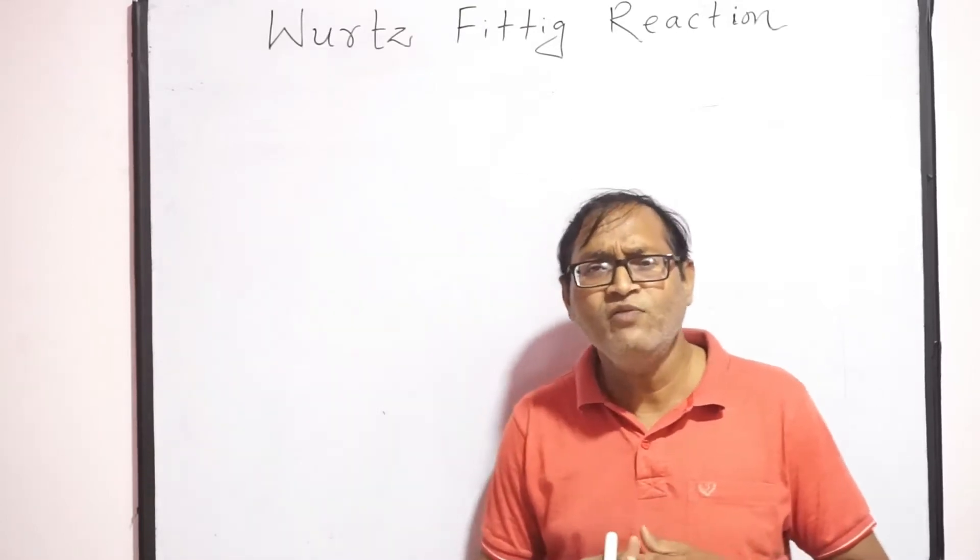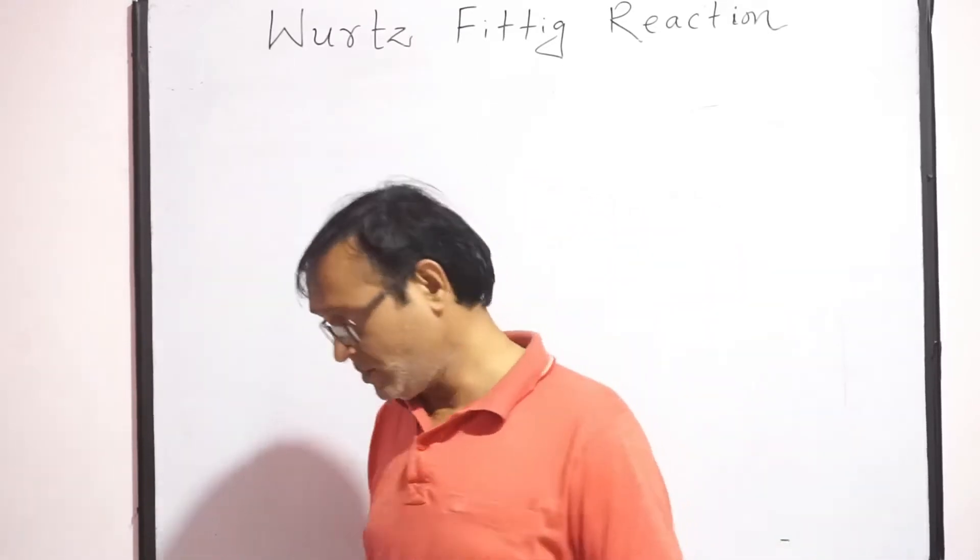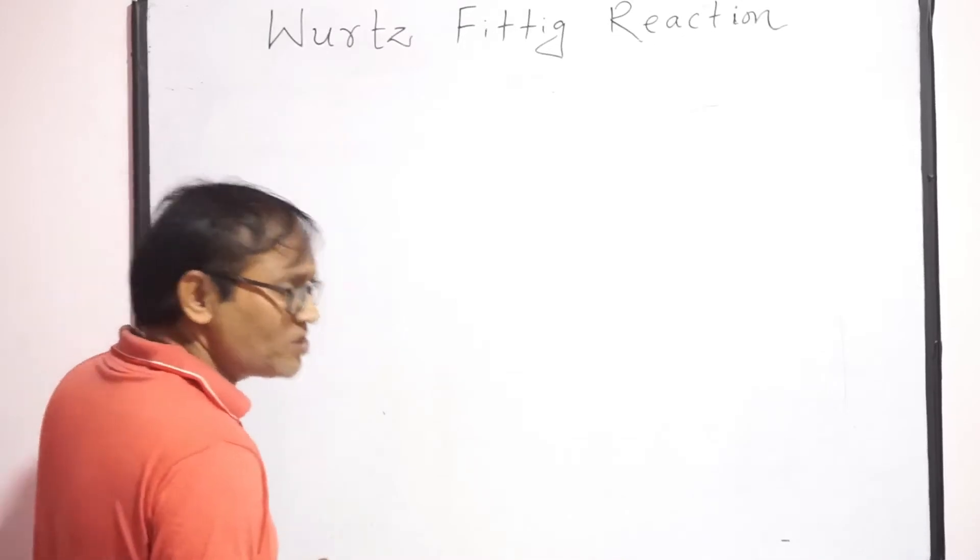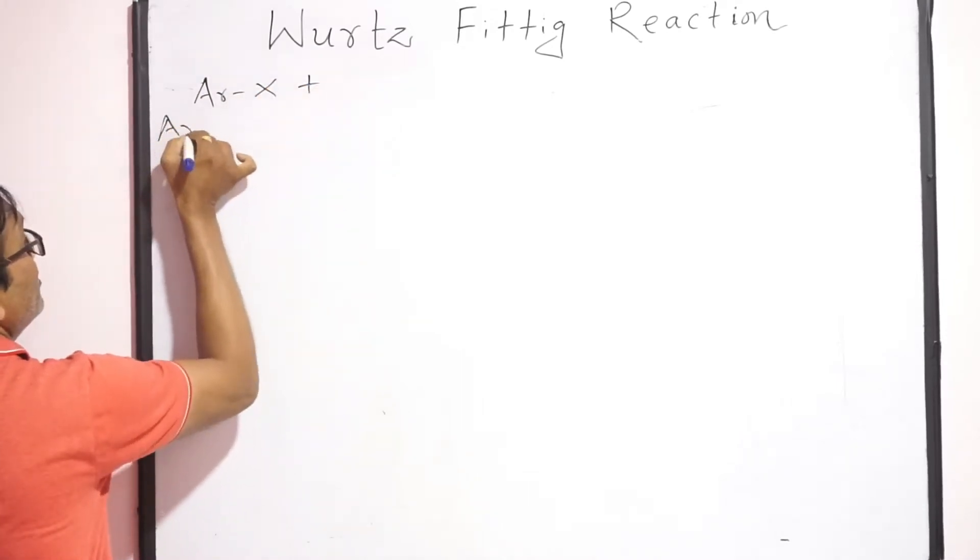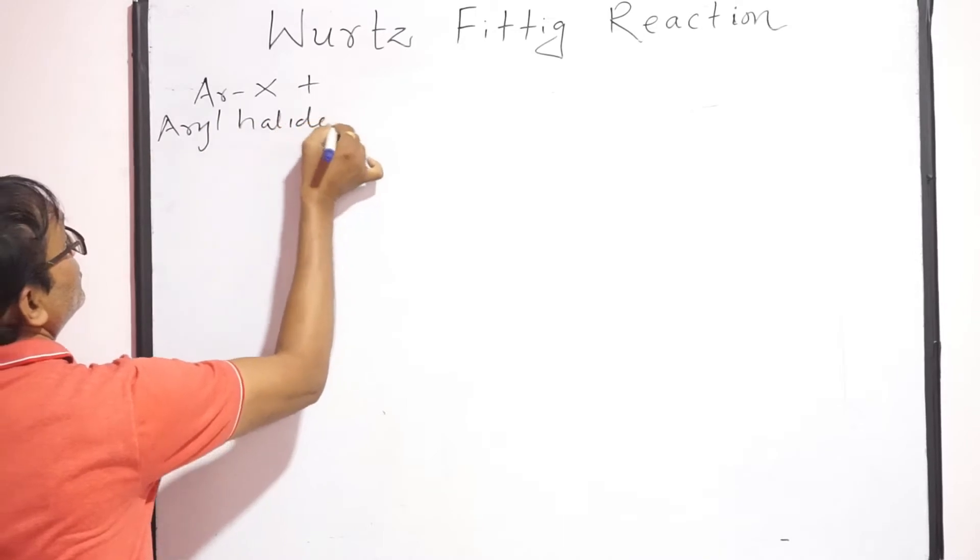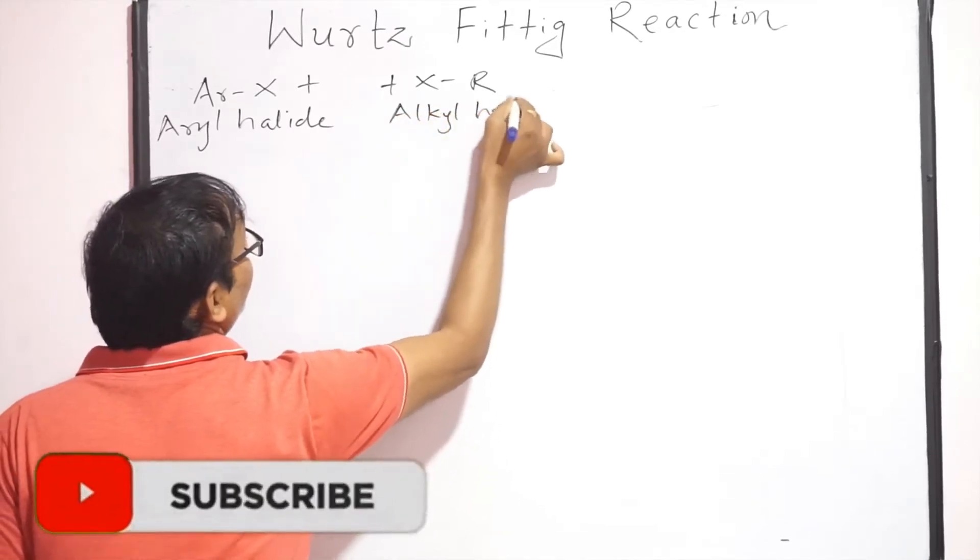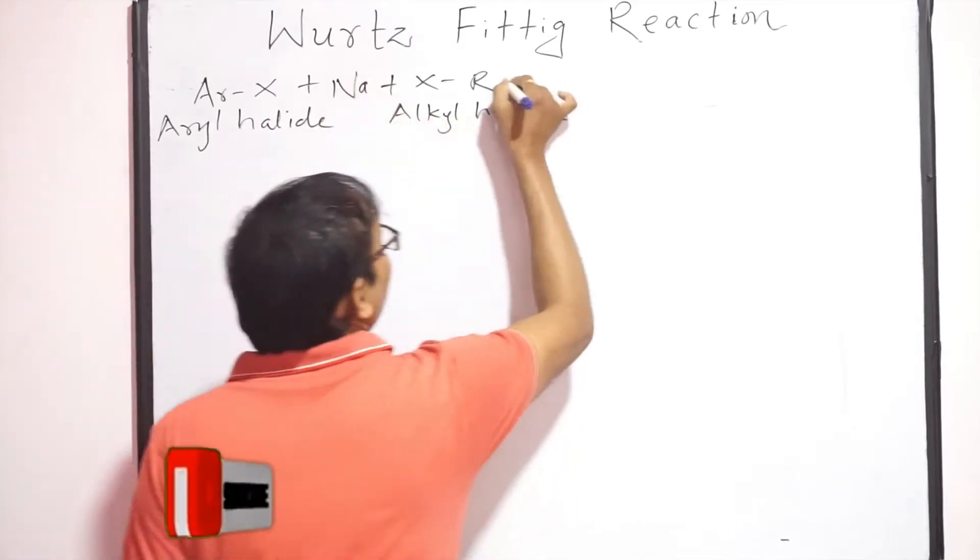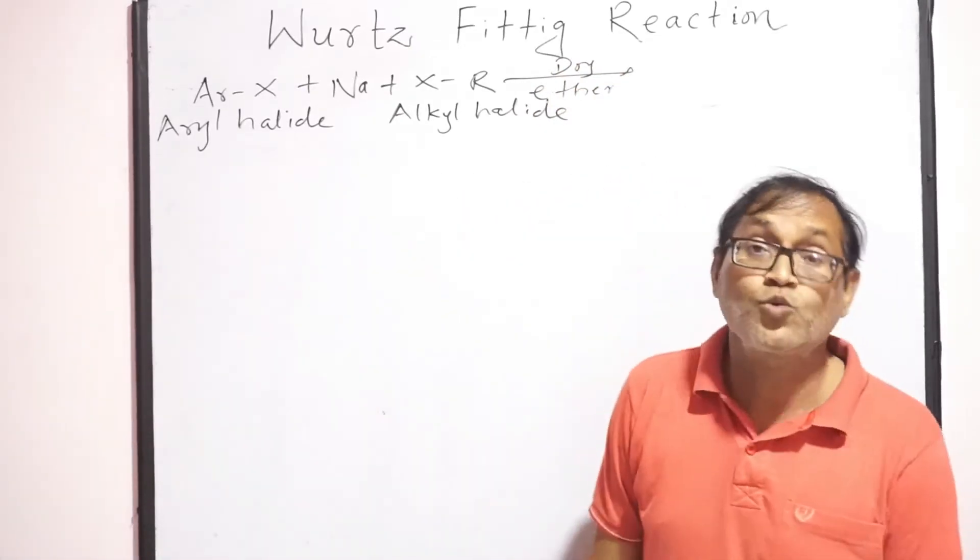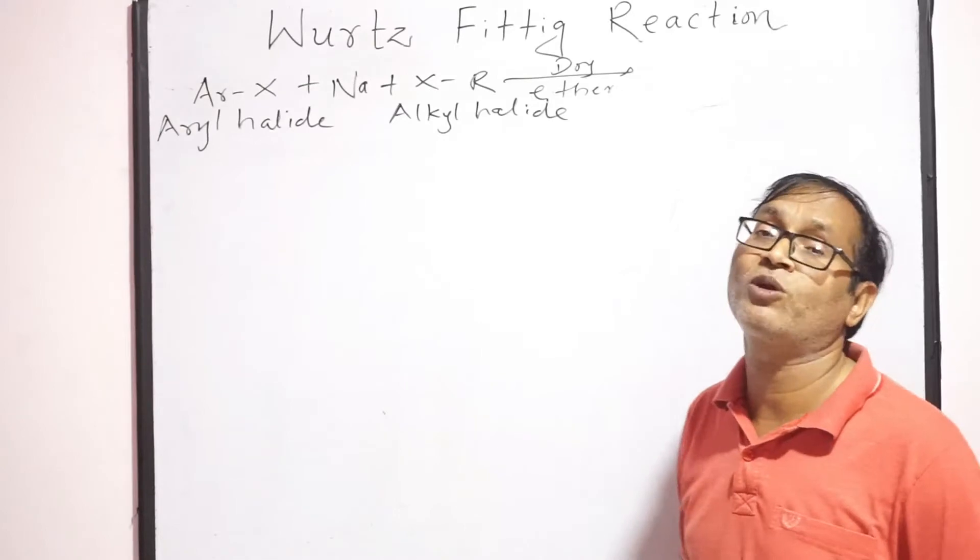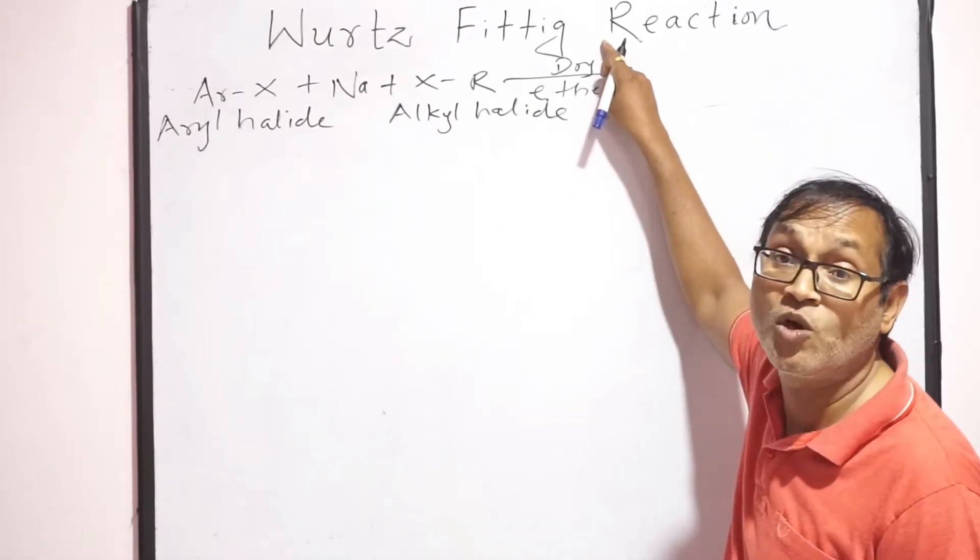Today we are going to deal with the reactions of alkyl halides with active metals like sodium. We are going to deal with sodium metal as a solvent as dry ether. Dry ether is used as a highly reactive metal. It reacts with air and water spontaneously, so we are going to use a proper solvent dry ether.